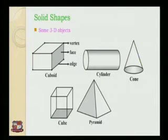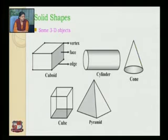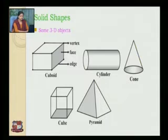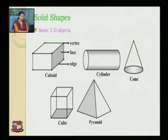Before that, let's observe some 3D objects. First is cuboid: a cuboid has 6 faces and 6 surfaces. These surfaces meet at edges, which are lines, and edges meet at vertices, which are points. A cylinder has 2 circular surfaces and 1 curved lateral surface. A cone has 1 lateral surface, 1 circular surface at the base, and 1 point at the top. A cube has 6 faces and these faces are identical.